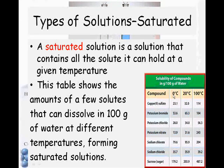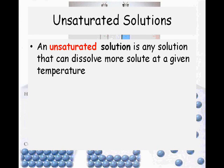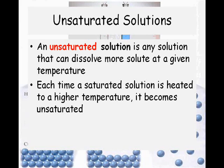At 0 degrees Celsius, if I had 25 grams of copper sulfate, I would have more than the saturated solution, so I would have a supersaturated solution. If I had exactly 23.1 grams, I would have a saturated solution. And if I had something like 20 grams, I could add more solute, so that would be an unsaturated solution. An unsaturated solution can take more solute at a given temperature. Each time a saturated solution is heated to a higher temperature, it actually becomes unsaturated.